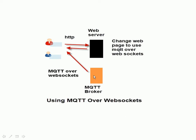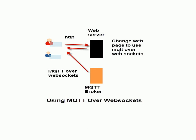The web browser connects and pulls in the necessary data from the web server using HTTP. The flight arrivals information it pulls from the MQTT broker using MQTT over WebSockets. MQTT over WebSockets is a bit of JavaScript that can be sent from the web server to the web browser, so you don't have to install anything on the web browser for this to work. It's just a standard web browser — everything is done on the web page.